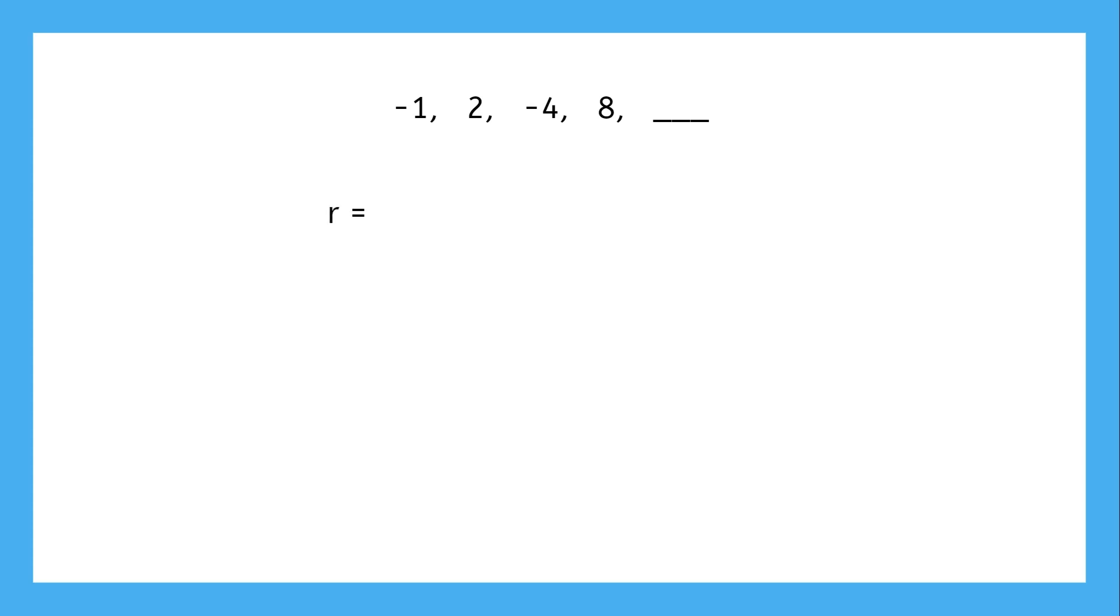Let's check for a common ratio. Negative 1 times what would be 2? Negative 1 times negative 2 is 2. The reason the sign changed was because we multiplied by a negative number. Does that also work for the next term? From 2 to negative 4, we would multiply by negative 2. And then from negative 4 to 8, multiply by negative 2 again.